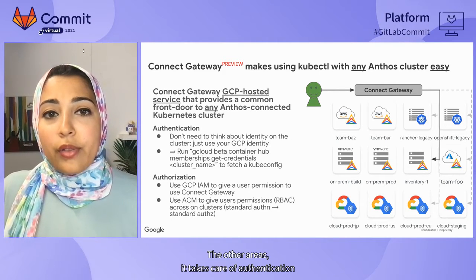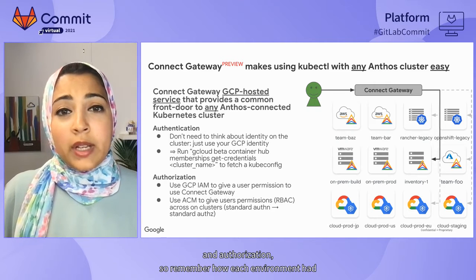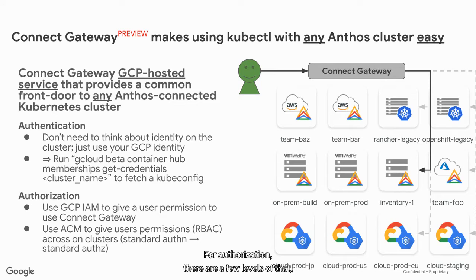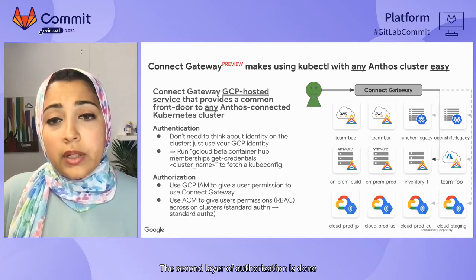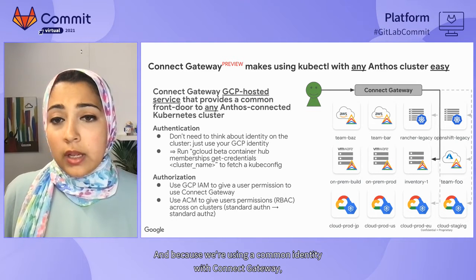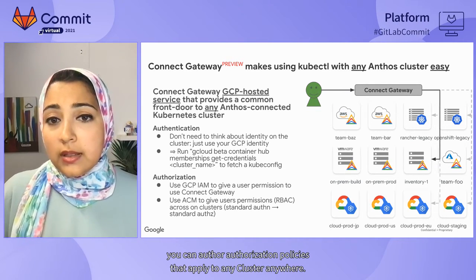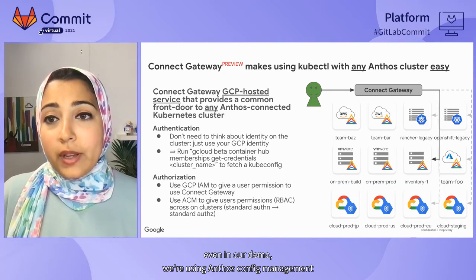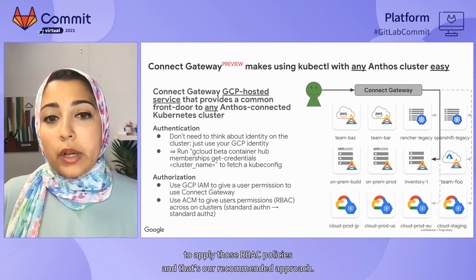Connect Gateway also takes care of authentication and authorization. With Connect Gateway, you can just use your GCP IAM identity — we even provide a familiar command to get your credentials. For authorization, there are a few levels. We do one level of authorization at GCP to validate whether a user can use Connect Gateway. The second layer is done on the cluster using standard Kubernetes RBAC. Because we're using a common identity with Connect Gateway, you can author authorization policies that apply to any cluster anywhere. In our demo, we're using Anthos Config Management to apply those RBAC policies — that's our recommended approach.